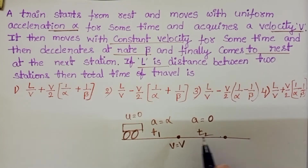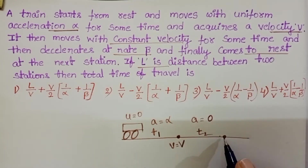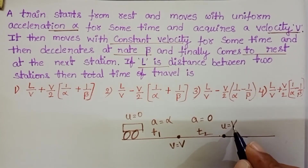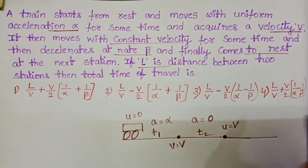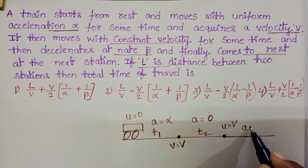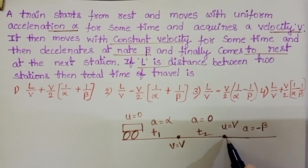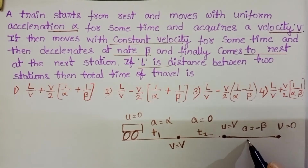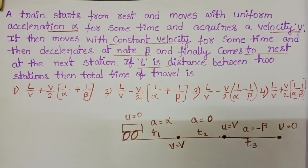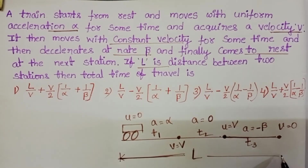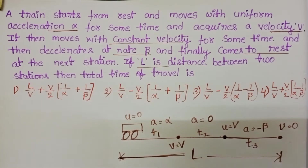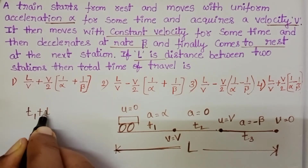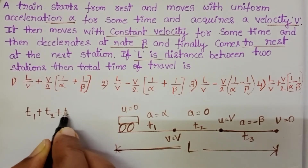Because it is moving with constant velocity. After then, the initial velocity is v and it decelerates at rate beta, so acceleration is minus beta, and the final velocity is 0 at this point. Let this time be T3. The distance between the two stations is L. We have to find out the total time of travel, T1 plus T2 plus T3.